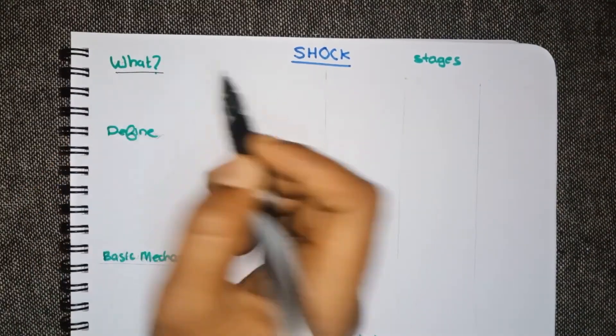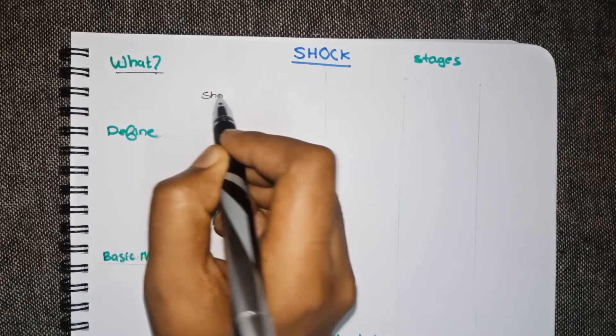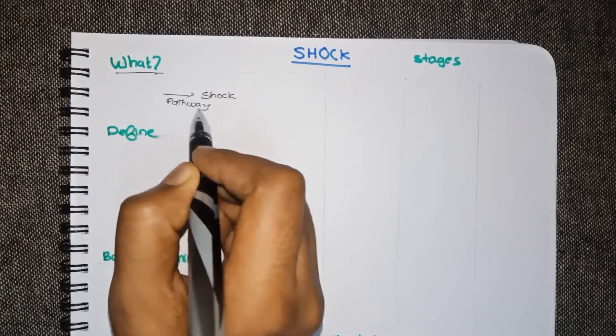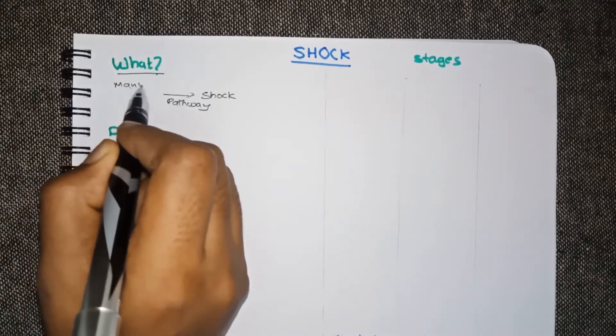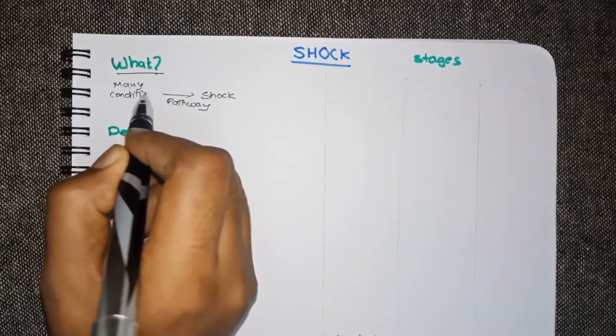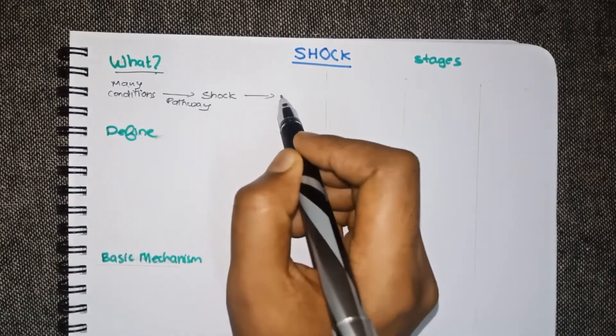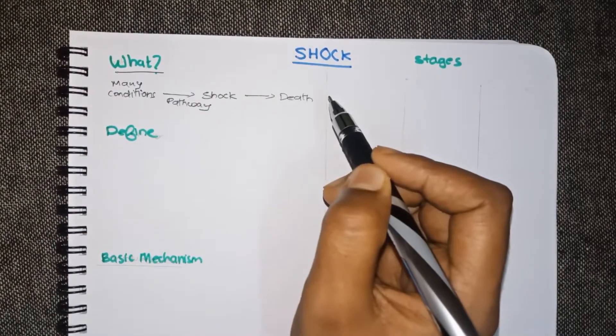So first of all, what is shock? Shock is actually a pathway or some kind of an outcome of many types of conditions or diseases. Many conditions cause shock and if it progresses, it can result in death.